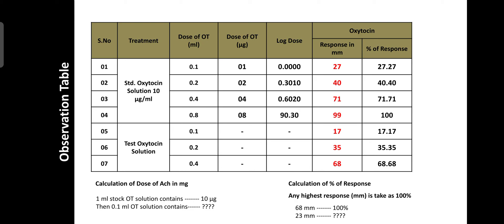Calculate the percentage of responses. The highest response from the standard oxytocin solution is considered as 100% for both standard and test calculations. So 99 mm = 100%; then calculate the percentage for 27 mm, 40 mm, and 71 mm for the standard, and for 68 mm, 35 mm, and 17 mm for the test oxytocin solution.